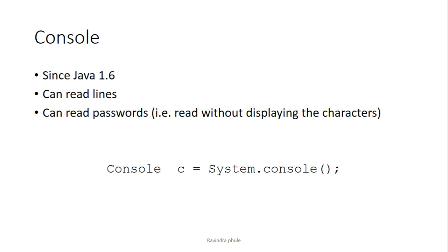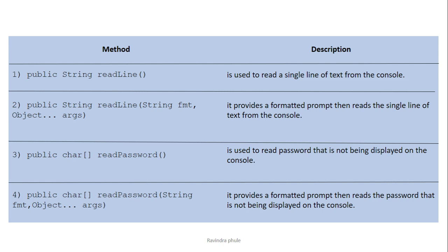The Console object has some methods to accept input. The Console class provides many methods; we will see some of the important ones. The first method is readLine(), which reads a single line of text from the console, whose return type is String and which is a public method. The second method is also readLine(), but it takes two parameters: a String parameter and an Object parameter. We are going to use the second method, and I'll show in detail how to use it.